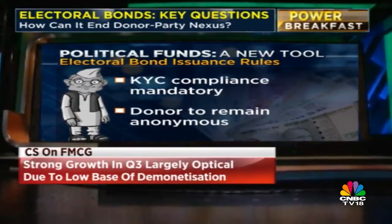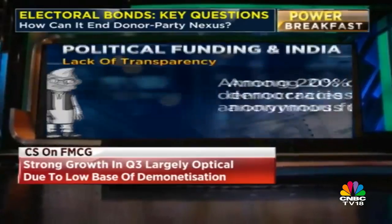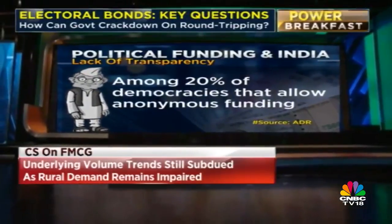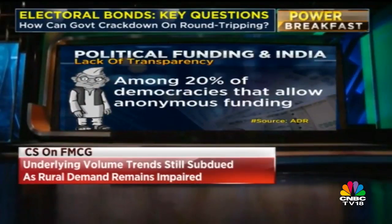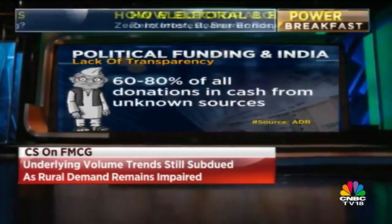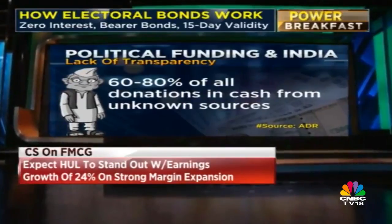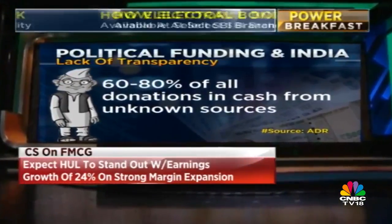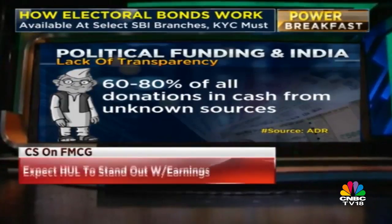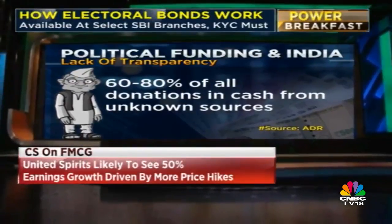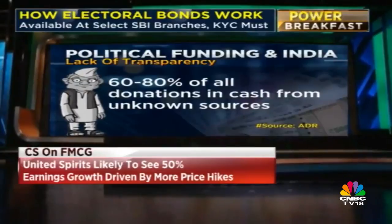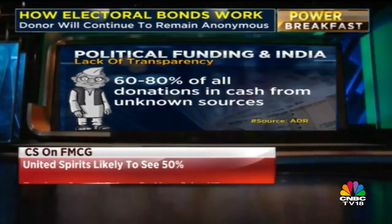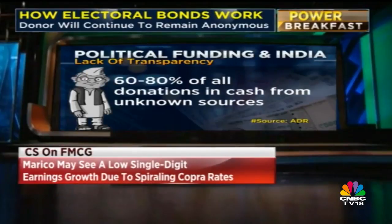It's no secret that India lacks transparency in political funding. According to a report by the Association for Democratic Reforms, India is among the 20% of democratic countries that allows anonymous political donations. Not just that — 60 to around 80% of all political donations in India are made by cash and by unknown sources. Kevin Lee is here to explain how these electoral bonds will bring about some big changes to political funding rules in India. Kevin, over to you.